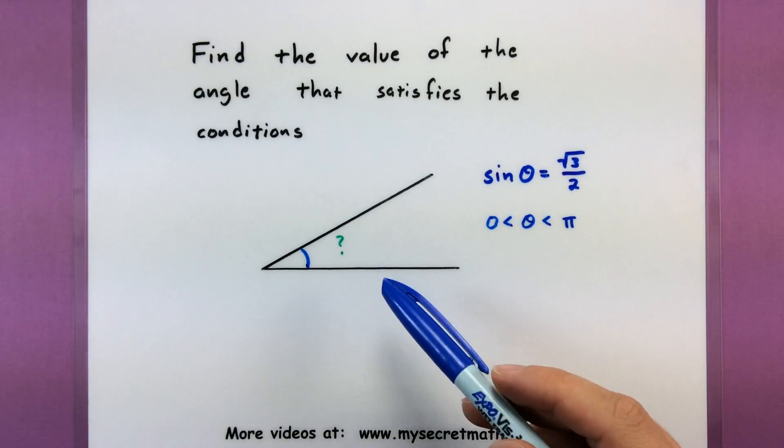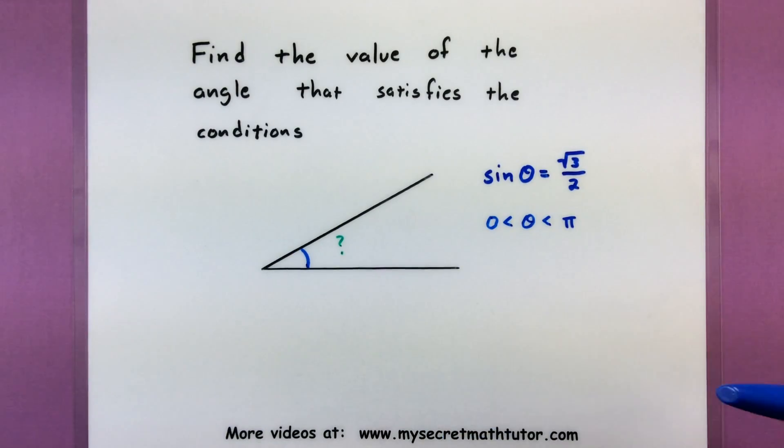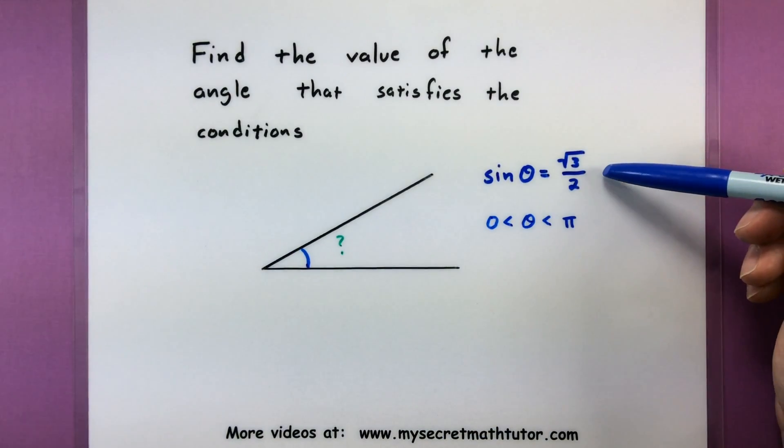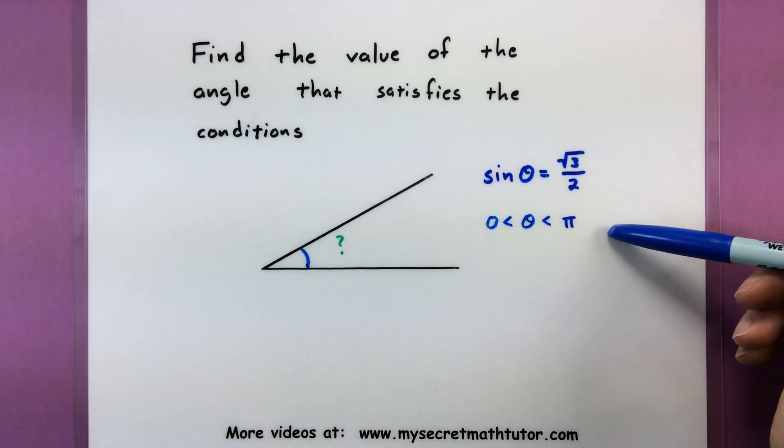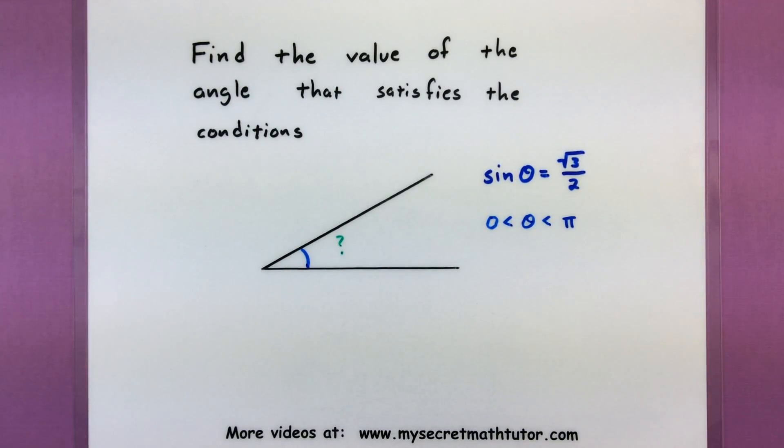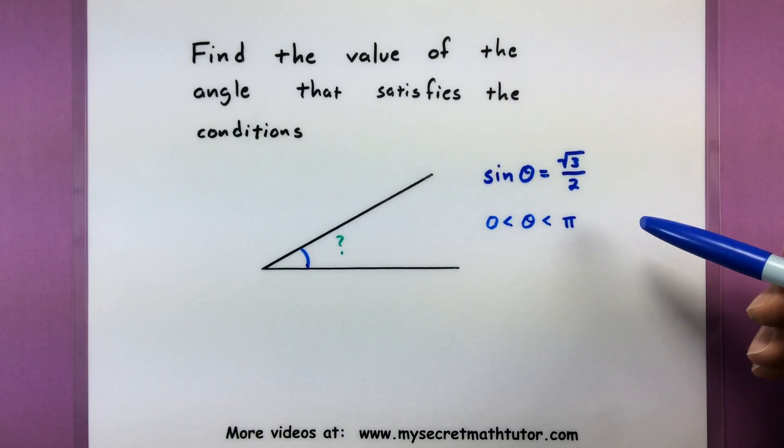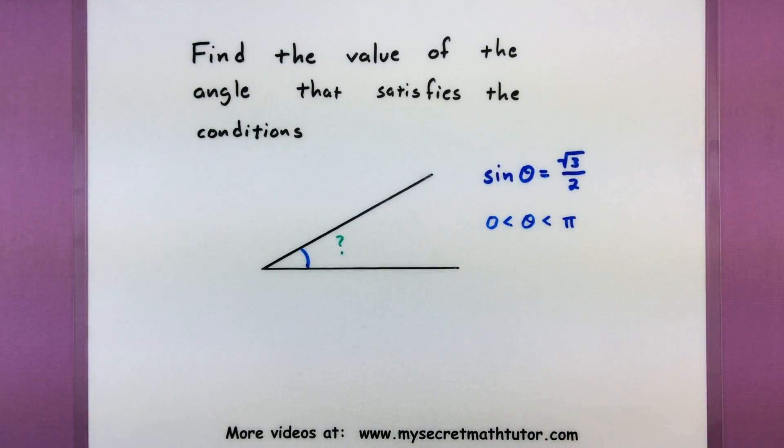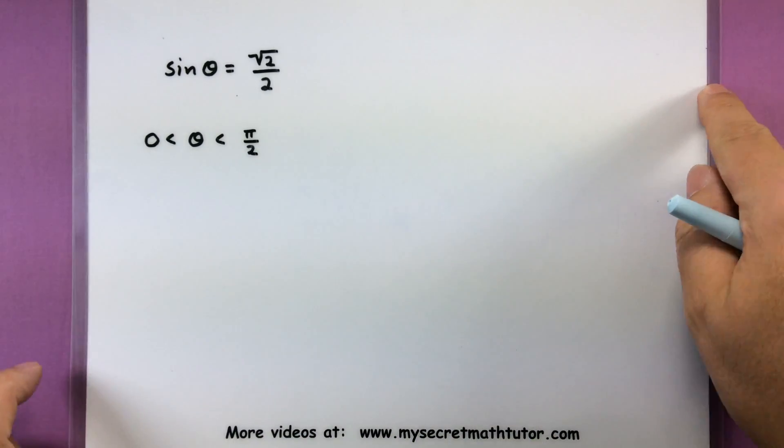So what I mean by that is we have some sort of angle and all we really know is maybe the value of the sine or cosine of that angle and we also know a little bit about where that angle lives, maybe which quadrant it is. If we think about our unit circle and work backwards we can go ahead and figure out what angle it's talking about. So let's see some examples. Let's see how this works.